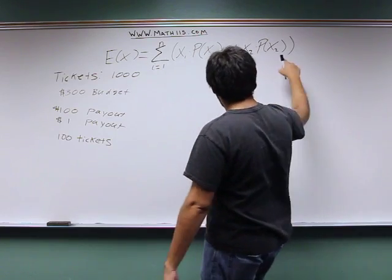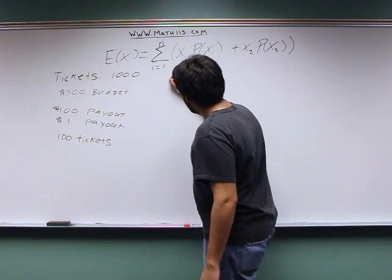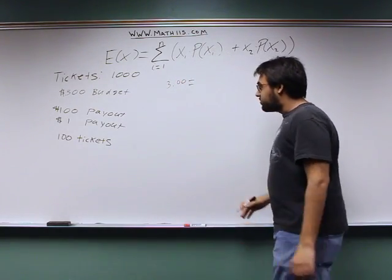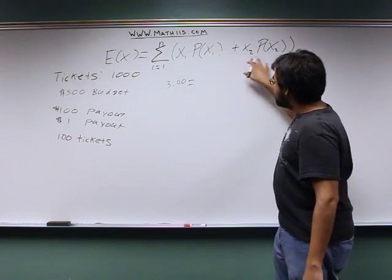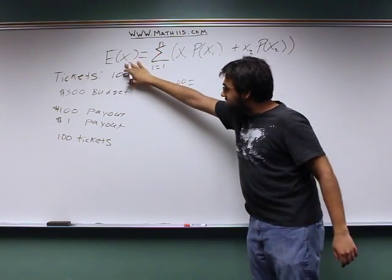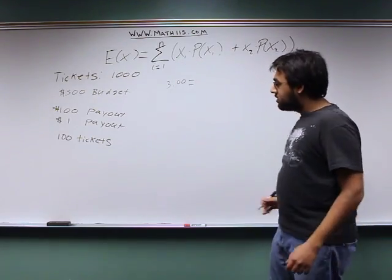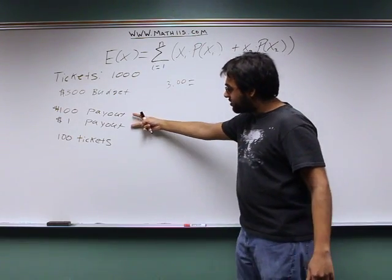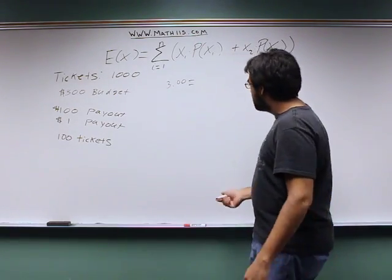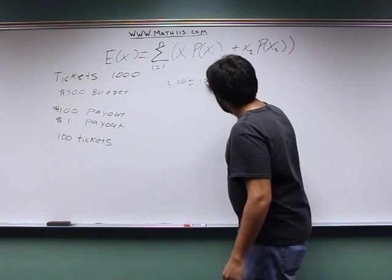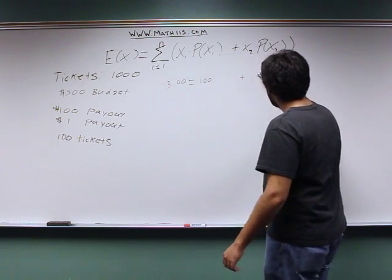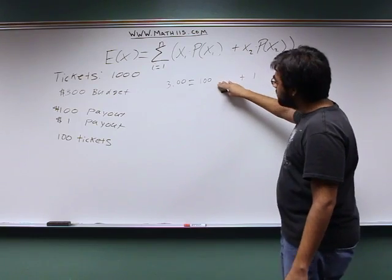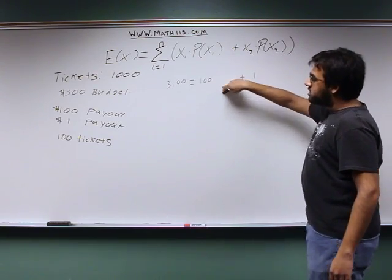So our expected value formula like we have up here is just going to follow this format. So we're going to have $3 as the expected value is equal to. So in this case, rather than having these numbers already, we have to figure out this number. This time we're given this number and we have to figure out one of these numbers. Now we also know that the X values refer to the possible outcomes. Our two possible outcomes are the $100 and the $1 payouts. So let's go ahead and put the $100 here, and then I'll do a plus sign, and then we'll do the $1 right there.